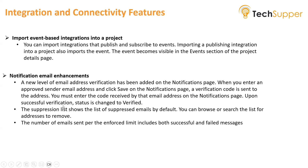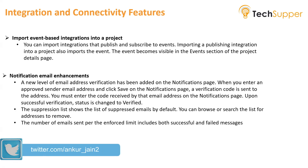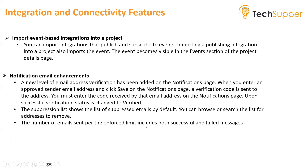Additionally in email enhancements: the suppression list, which shows emails to which you cannot send notifications from inside your integration, now shows suppressed emails by default. You can browse or search the list and add or remove email addresses from it. Also, the number of emails sent displayed on the dashboard now includes both successful and failed messages in the enforced limit count.